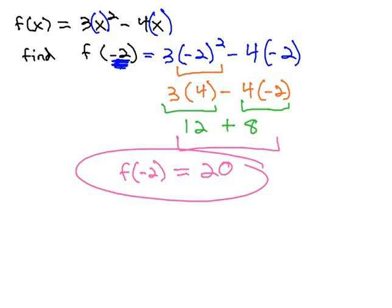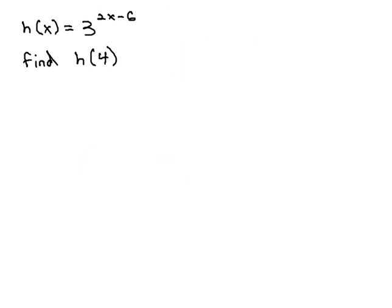Let's try another example. In this example, h of x is equal to 3 to the 2x minus 6 power, and we're asked to find h of 4. Notice the 4 has replaced the x in the notation. This means in the function, the x is going to be replaced again by 4.